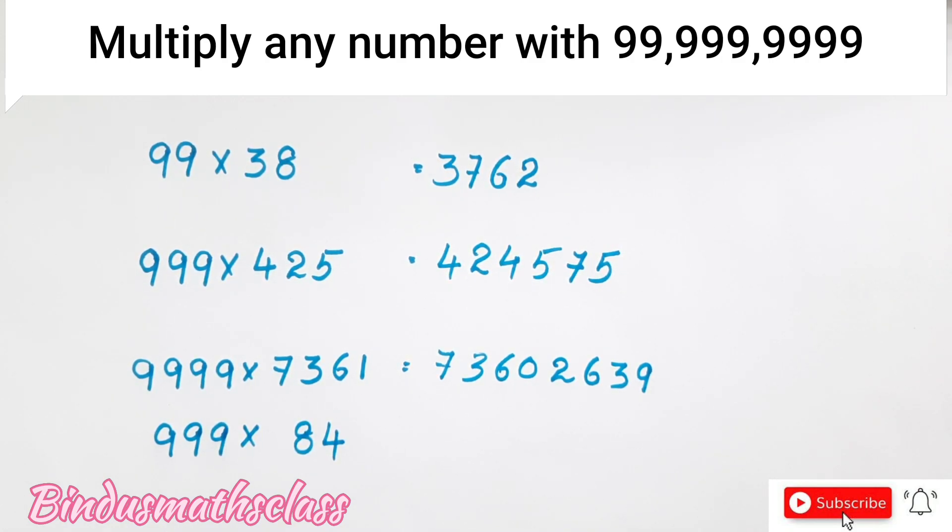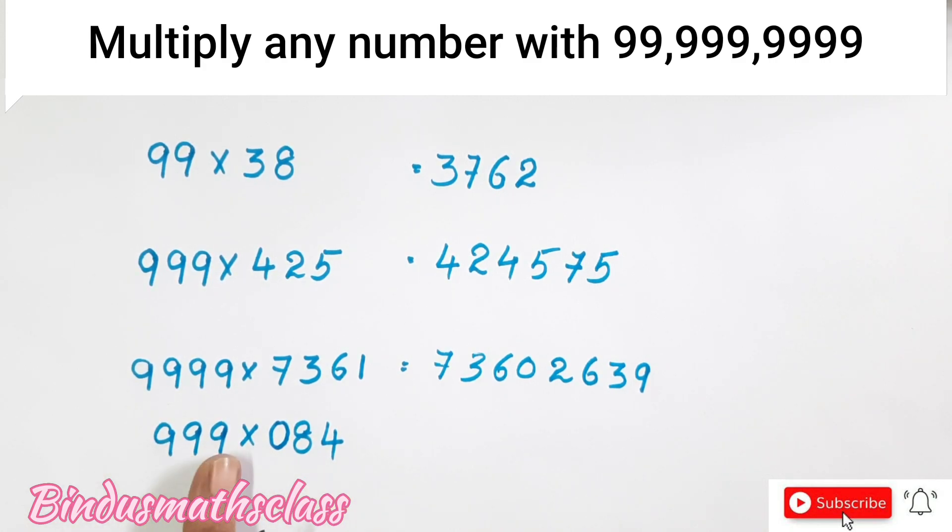Let us check another number if the digits are not equal. So that simply we add 0 to maintain the number of equal digits. So here 3 digits by 3 digits. Now again the same process. Just before the number. So that we can write 83.